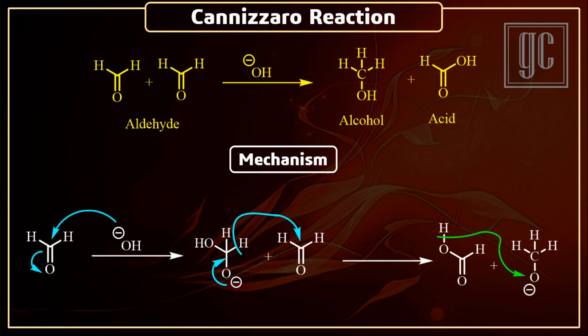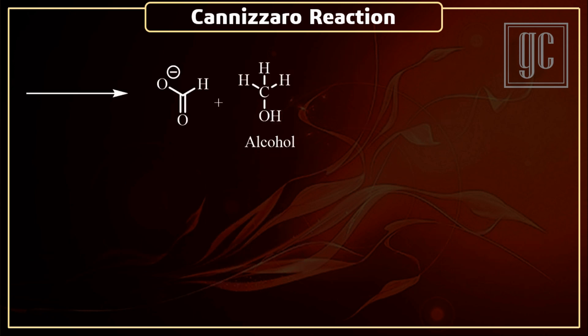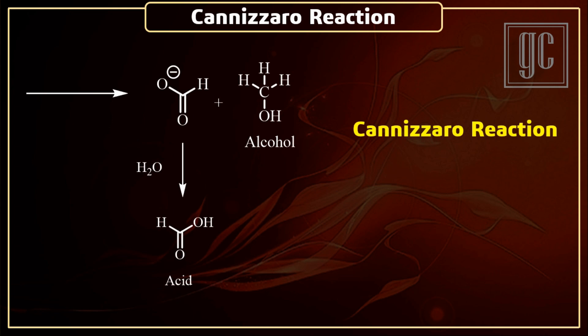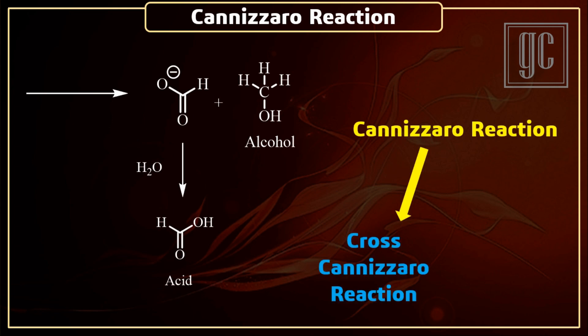This occurs because the carboxylic acid has acidic nature and can easily release a proton, and the alkoxide molecule, which is basic in nature, can accept a proton. As a result, alcohols are obtained.